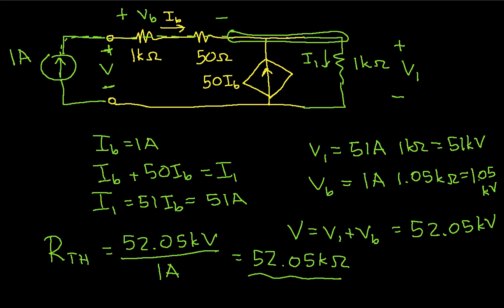So anyway, that's how I compute the Thevenin equivalent resistance in a circuit that has only dependent sources. I use a test voltage source or current source and find either current or voltage and compute the Thevenin equivalent resistance from that. So with that, we'll end this video.